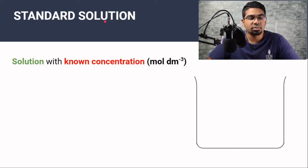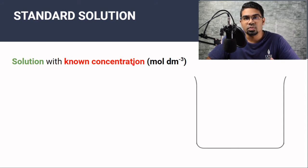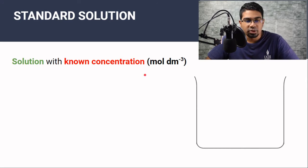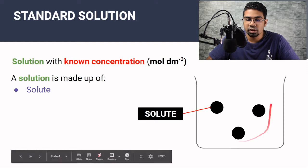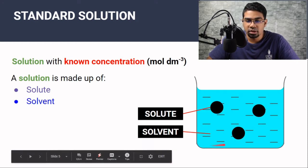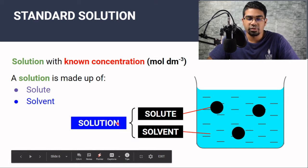First, let's take a quick look at what a standard solution is. A standard solution is simply a solution with a known concentration — this means we know exactly the concentration of the solution accurately. A solution is made out of solute dissolved in a solvent. The liquid phase is normally the solvent and the solid phase is normally the solute. Together they form a solution.